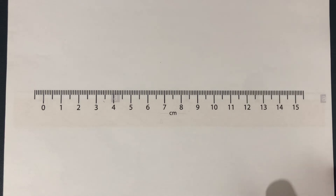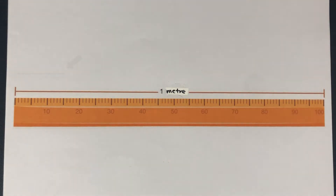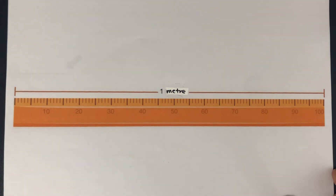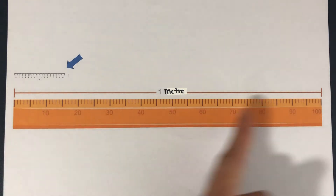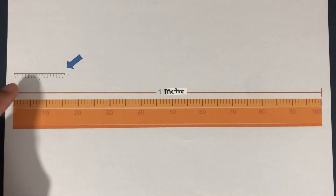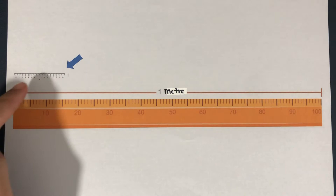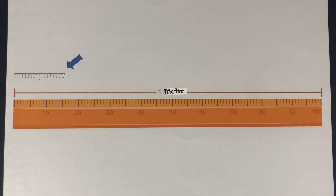But what do you use to measure very long objects like a table or maybe the length of an elephant? You will need to use a meter ruler. This is a picture of a meter ruler — this is not its actual length — but this ruler is exactly 1 meter long. Compared to the 15 cm ruler, here is the meter ruler, and this small portion here is the length of the 15 cm ruler. So, this is 15 cm while this is 1 meter long.